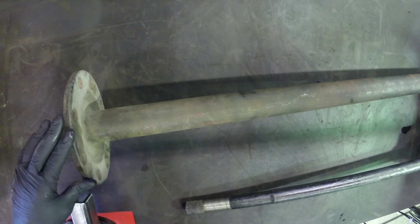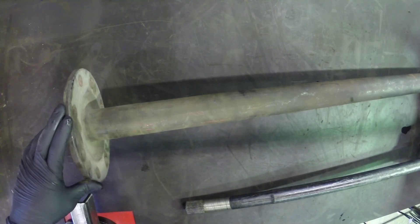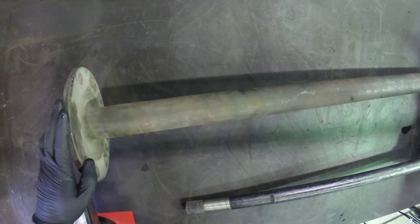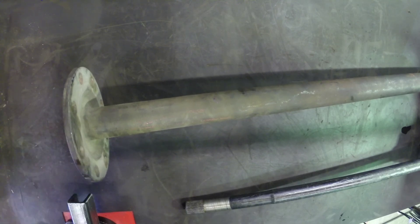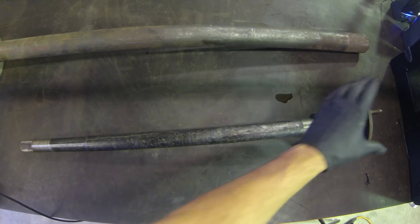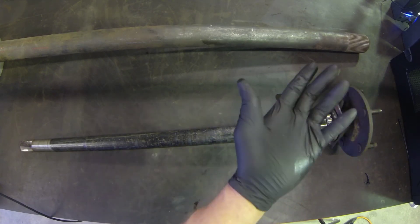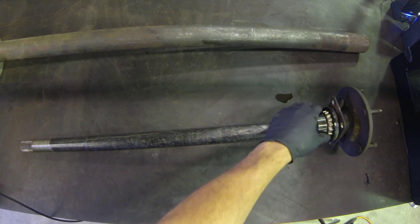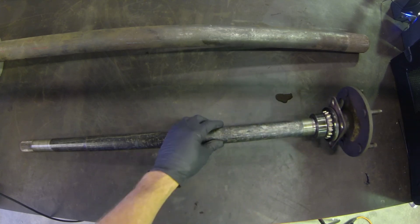And so the real difference here is that we can pull a full-floating axle shaft with the weight of the vehicle on the tires, but in a semi-floating axle shaft, we actually need to remove the wheels or take all the weight off of the wheel, remove the wheel for us to be able to remove the axle shaft.